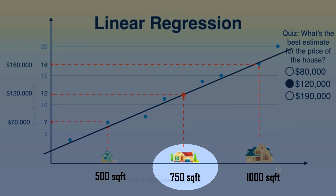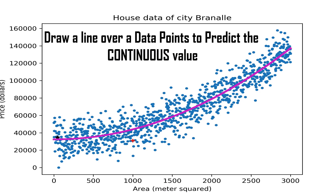We are expecting a continuous value — the actual value. Whenever you expect a continuous actual value to be predicted, that is a regression problem.